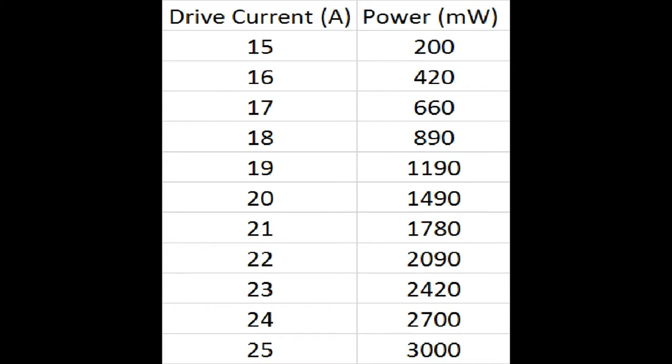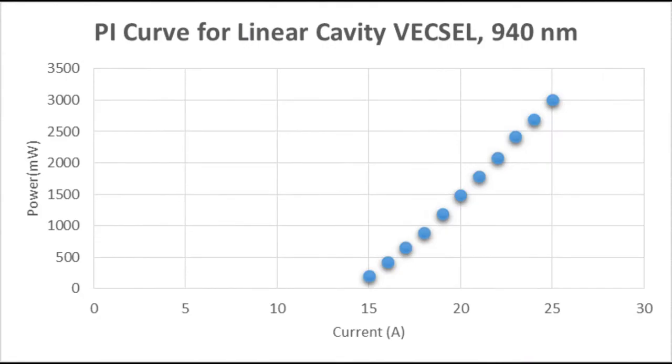This table shows our collected data. The PI curve of the VECSEL starts at zero until it hits threshold, where it begins lasing and there is a linear relationship between P and I. If we had a thermal detector detect above 3 watts accurately, we'd be able to see the graph taper down as we continued in the X direction.